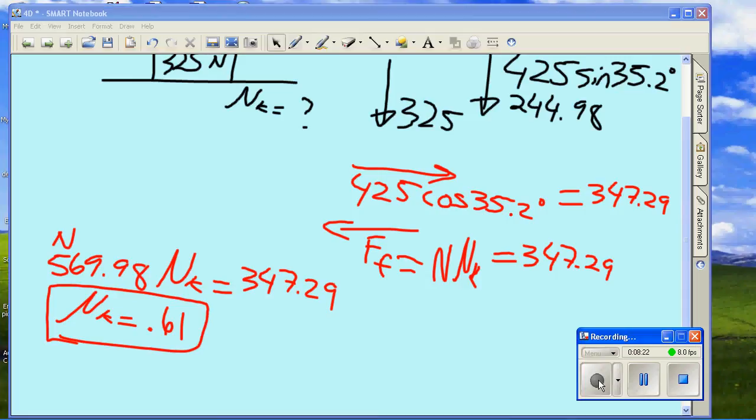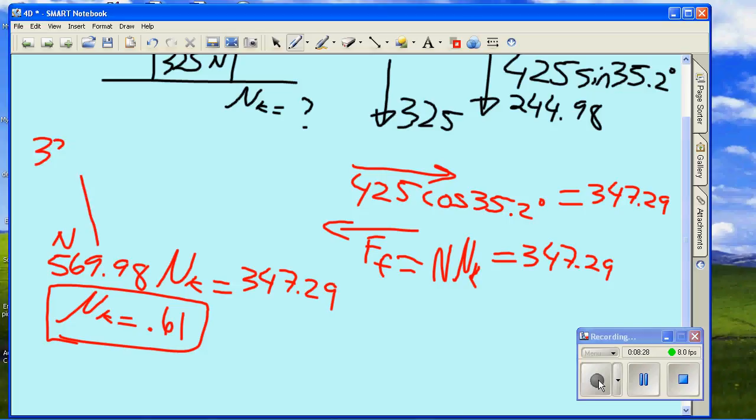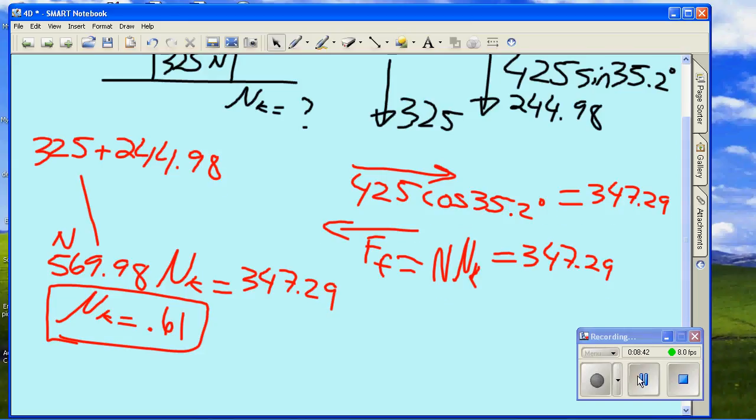The question is, Mr. Duncan, where did the 569 come from? 569 was the 325 plus the 244.98, weight of the box plus you pushing down on it. Okay, Holly? Okay, the question is, how do I know the force of friction is equal to 347.29?